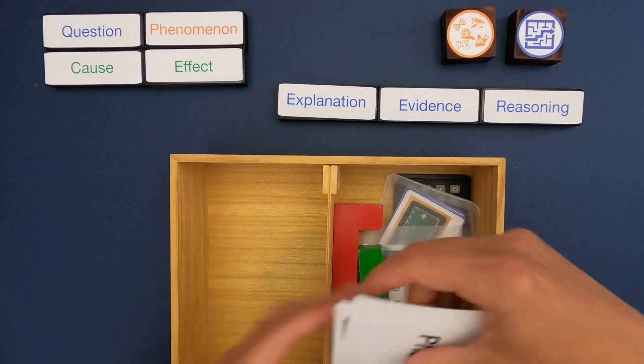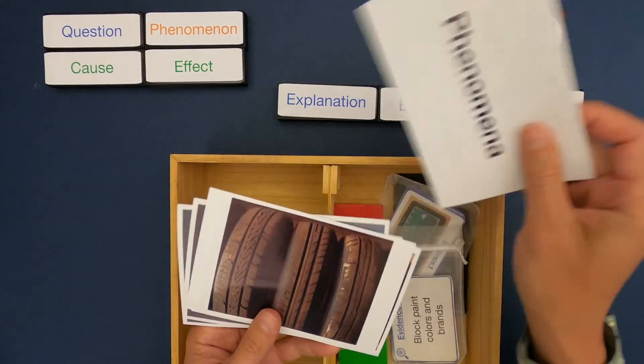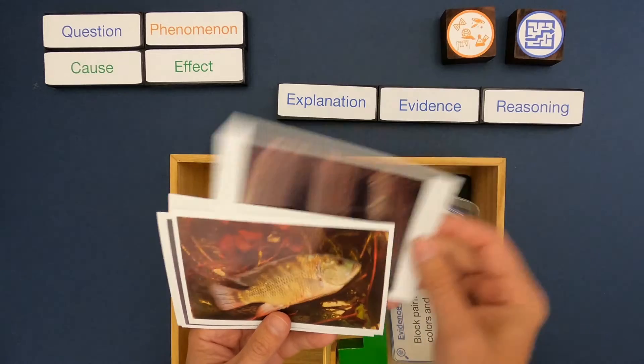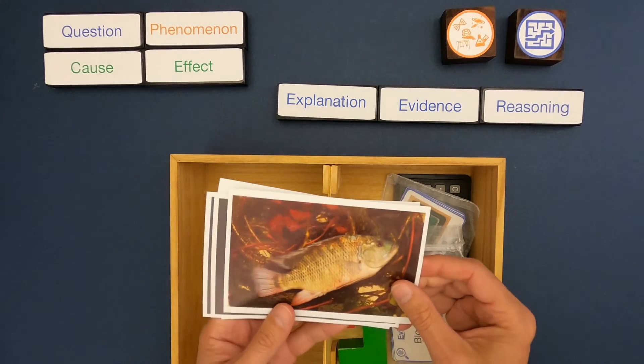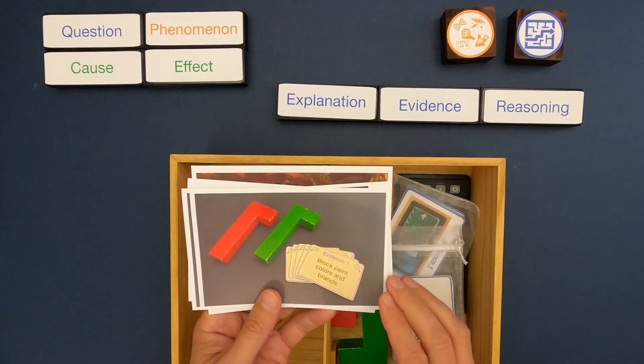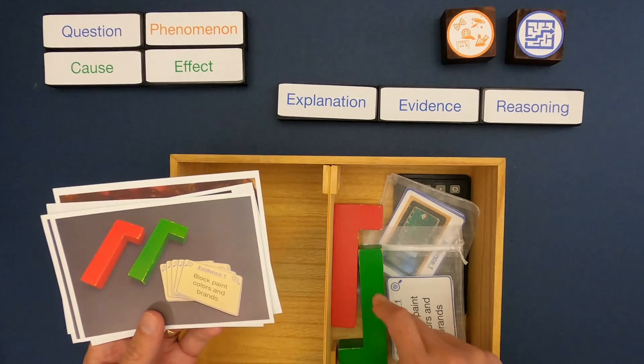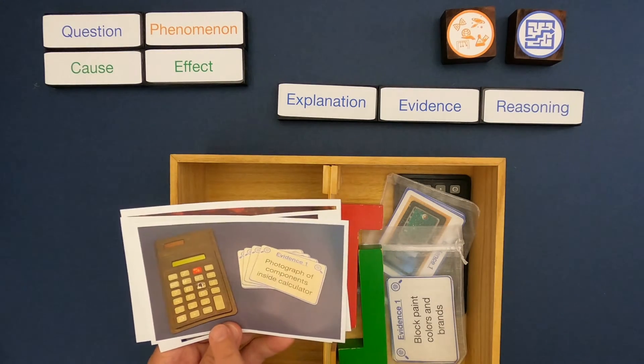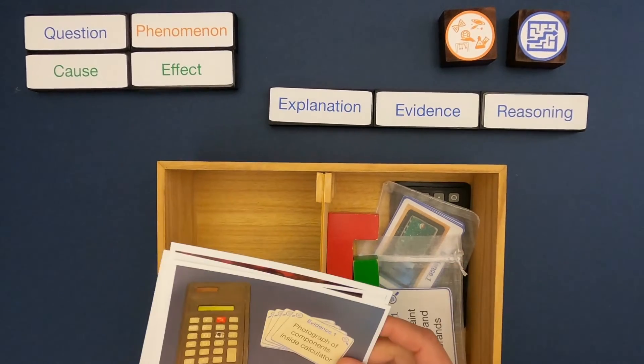After watching this video you should be able to look at a phenomenon like uneven tire wear on a car or even tilapia growth and how different ponds might affect their growth. I'm going to start by showing you how to look at evidence related to this red and green block, and then you'll have a chance to do the same with this old calculator.